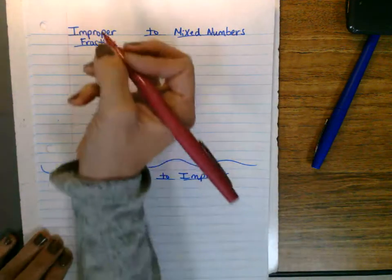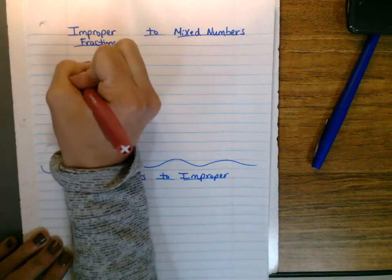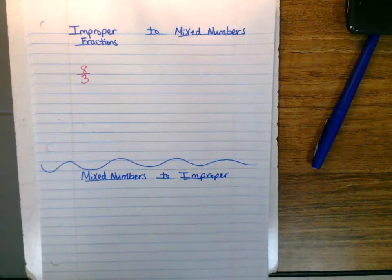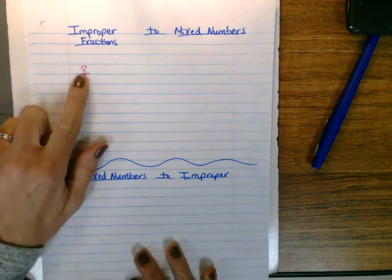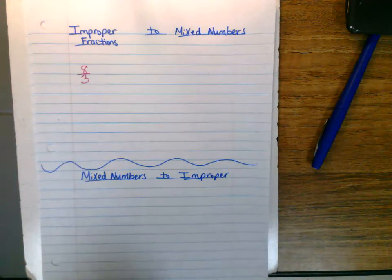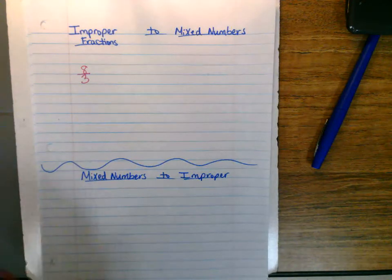So students are learning what improper fractions are, and we could just basically say, I'll just do eight-thirds. We are learning that improper fractions have a larger numerator than the denominator, and we need to change that so they are changing to a mixed number, and sometimes it happens to become a whole number.